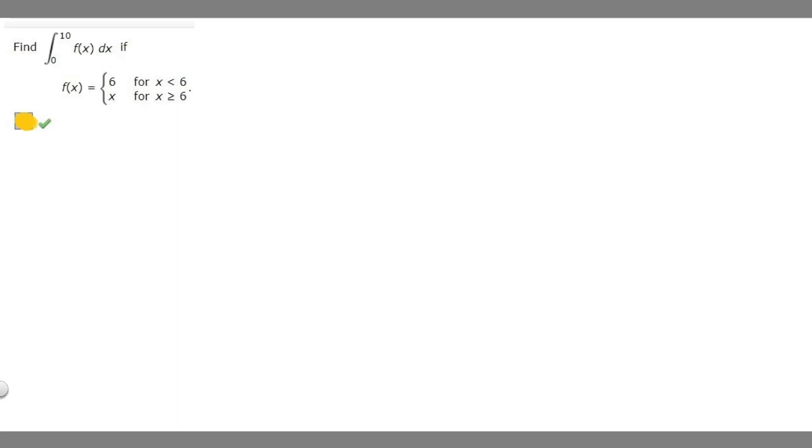So in order to solve this, since we have a piecewise function here, we want to split it into two different integrals. We're going to start at our bottom, so bottom of our range, all the way up until the point where it splits. In this case it splits at 6, so we go from 0 to 6.